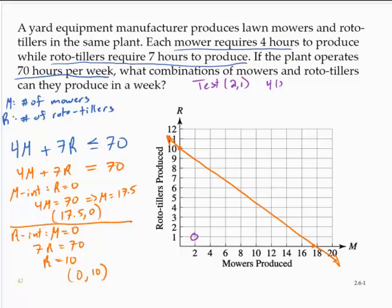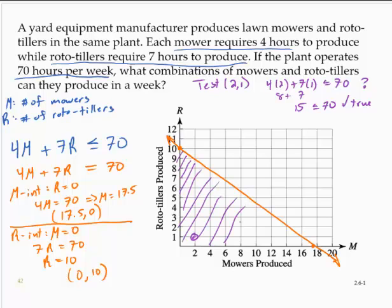So I'd have 4 times 2 plus 7 times 1. Is this less than or equal to 70? We'd have 8 plus 7, that's 15. Is 15 less than or equal to 70? Yes, that's a true statement. What that tells me is that this point is a solution of the inequality. What it also tells me is I can shade this entire region containing that point.